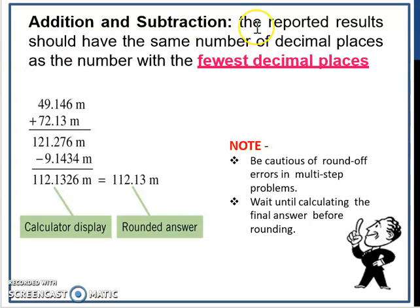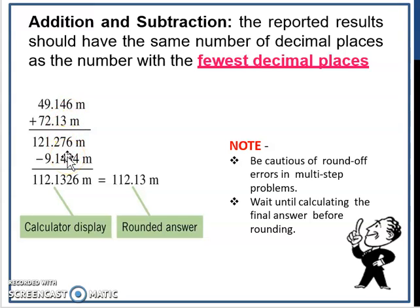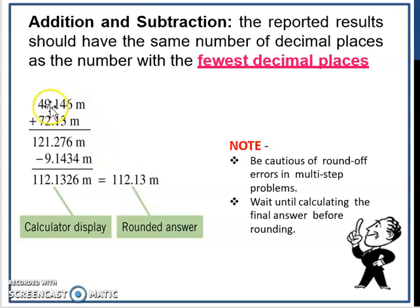For addition and subtraction, the reported result should have the same number of decimal places as the number with the fewest decimal places. Contohnya, you have numbers with 3, 2, 3, and 4 decimal places — jawapan kamu mesti ada 2 titik perpuluhan. So here we have 112.1326, and you have to round your answer to 112.13.